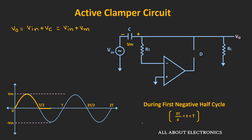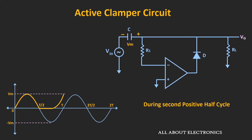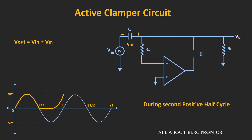During the time from 3T/4 to T, the output voltage Vout equals Vin plus Vm. If you see the output voltage, it will look like this. During the second positive half cycle, the voltage V- equals Vin plus Vm. As the input voltage increases in the positive direction, V- remains greater than 0, so V- is greater than V+. The op-amp operates in the open-loop configuration, and the output voltage Vout equals Vin plus Vm.